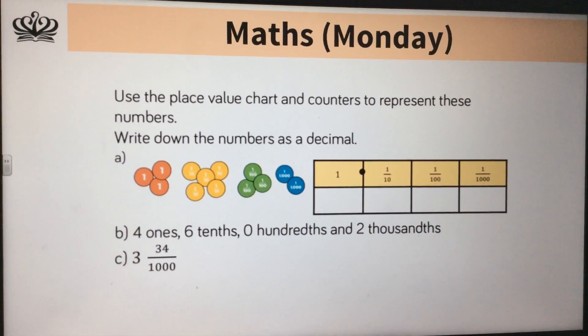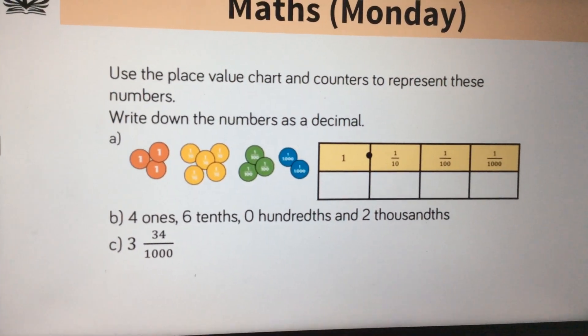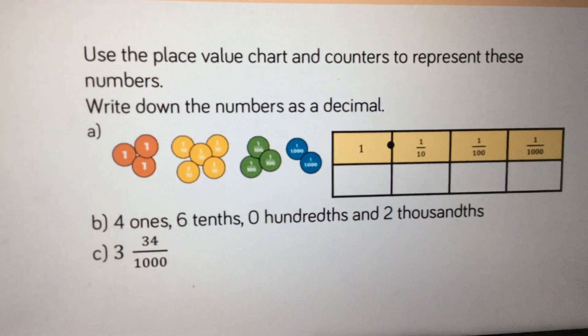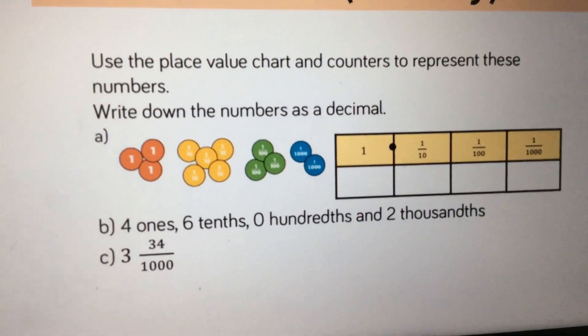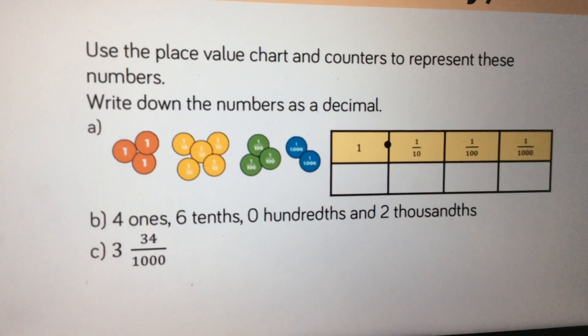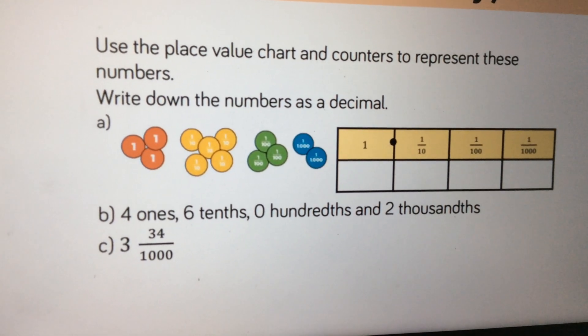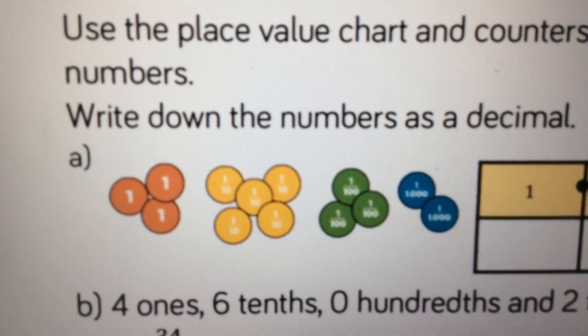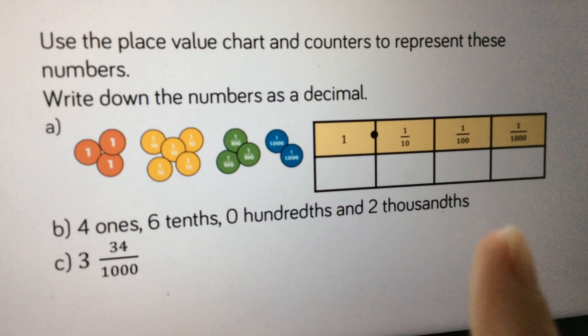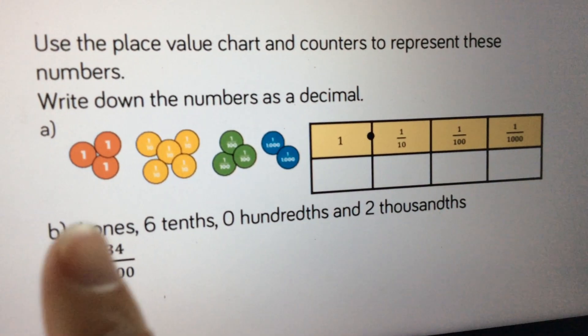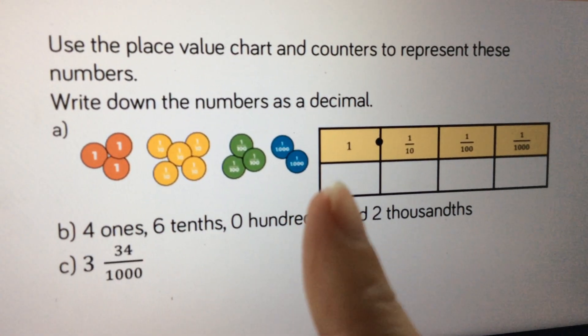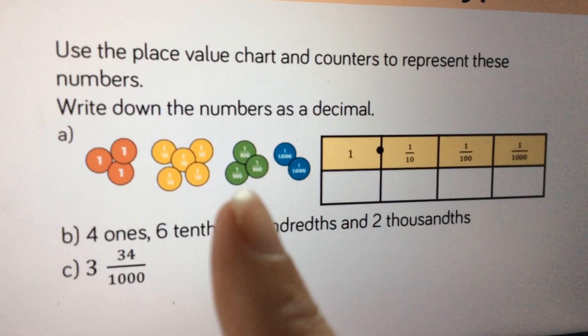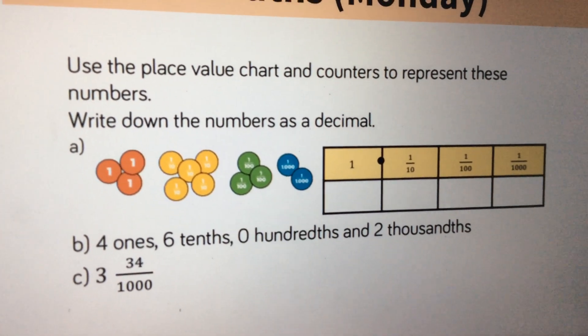Right, then we've got four more questions. Have a go at doing these. Make sure you read the instructions carefully. I'm just going to quickly explain what you need to do for each one. So it says, use the place value chart and counters to represent these numbers. So you can use counters if you've got them, but you can just write down the number if not. So, we've got A, B and C. For A, you've got different counters which have different values. So you just need to put those into the right place on the grid. So three, those are three whole numbers. Then you've got five-tenths, three-hundredths and two-thousandths.